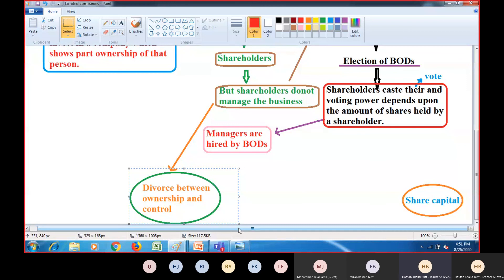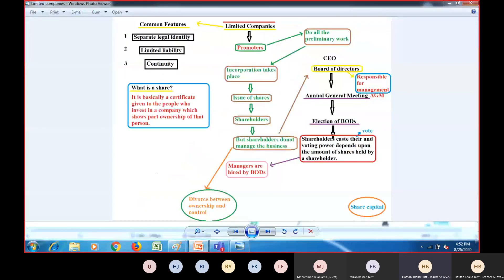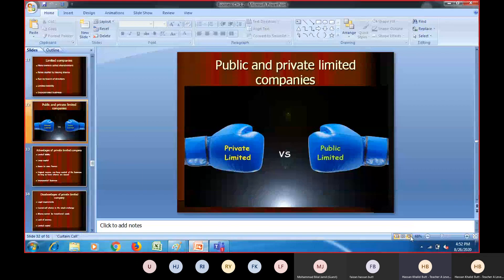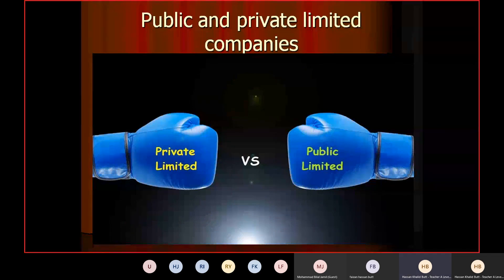We will discuss why and when it will be difficult to grab the position of board of directors. In the next class we will talk about the different types of limited companies — private limited companies and public limited companies. If you have any question, I am here. Otherwise, thank you very much. That is all. I will see you in the next class.